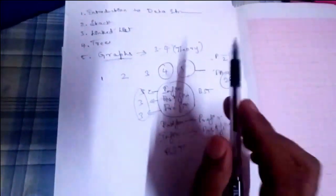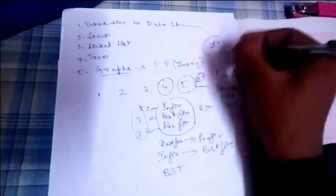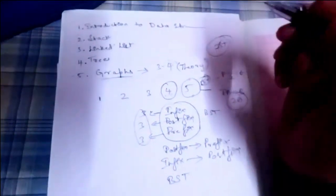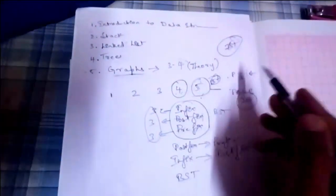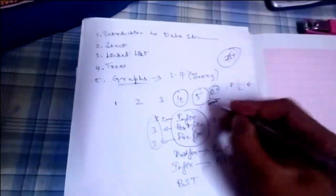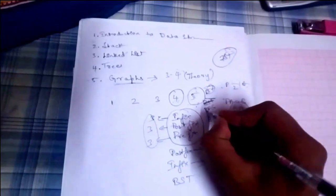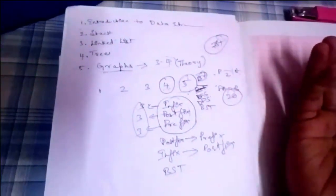For the fifth module, read the theory thoroughly. If you study it well, you can definitely score 15 plus marks — I have observed this with many students. Study the fifth module completely focusing on theory. If you can also study the C programs, go ahead. You must understand BFS and DFS — these are important topics. They can ask definitions or descriptions of BFS and DFS.